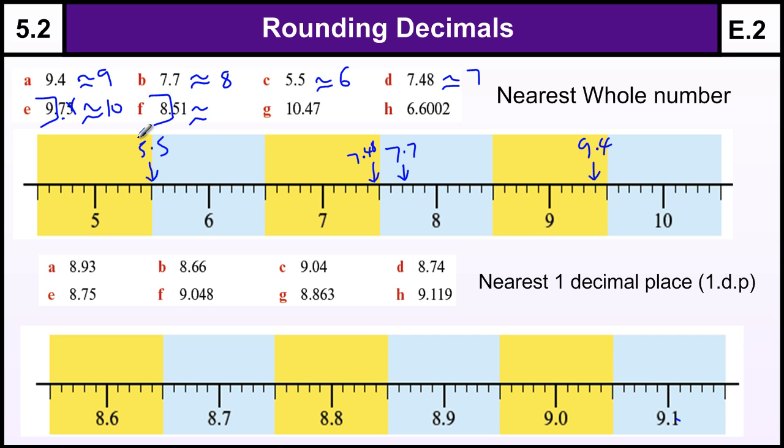This one, 8.51 is slightly over halfway so that's going to round up to 9. This number is between 10 and 11, the 7 doesn't matter so we look at the 4, that's below halfway so that's going to round down to 10. And we're looking at this bit, these digits don't matter. 6 is above halfway so we're going to round it up to 7.